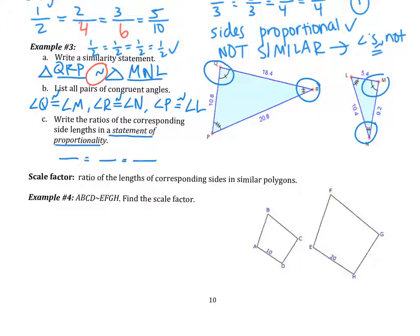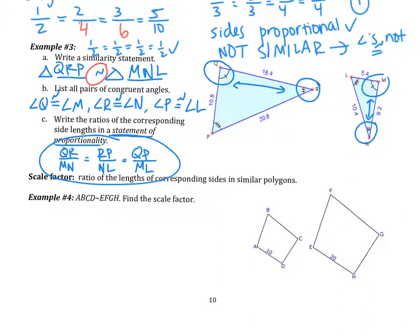We also need to write the ratios of corresponding side lengths in a statement of proportionality — this tells us which sides go together, using notation rather than actual lengths. For the first triangle: side QR goes from one to two tick marks, corresponding to MN; side RP goes from two to three tick marks, corresponding to NL; and side QP, from one to three, goes with ML. This is the statement of proportionality.